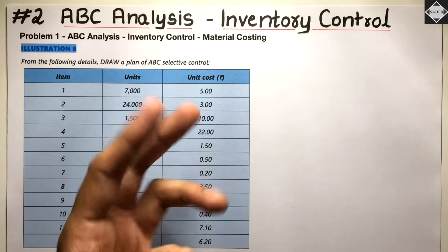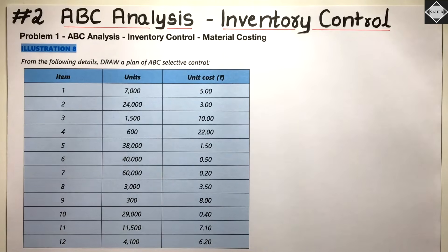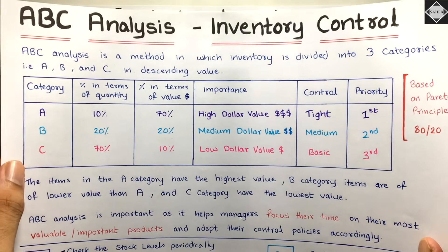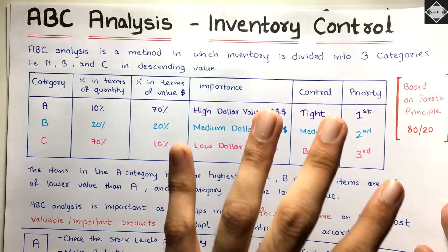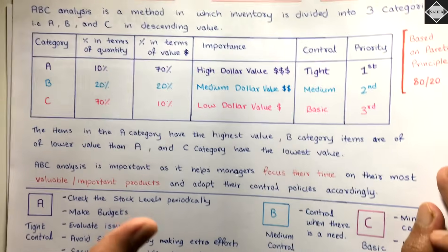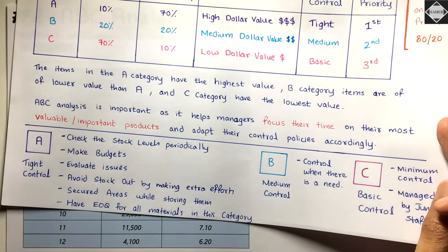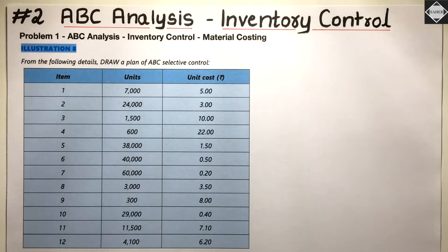We have already understood the concept in the previous video. If you don't know the concept of ABC analysis as a technique of inventory control, please watch that first video — you will understand it in detail with examples. The link is in the description below as well as in the 'i' button.